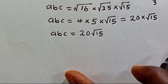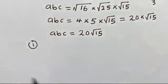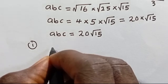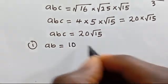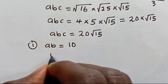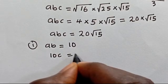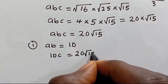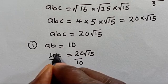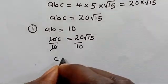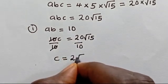Case 1: ab equals 10. Substituting into abc equals 20 root 15, we get 10c equals 20 root 15. Dividing both sides by 10, we find c equals 2 times root 15.